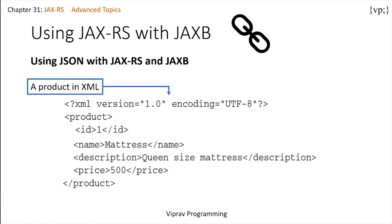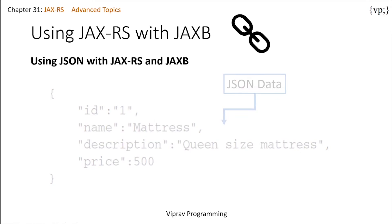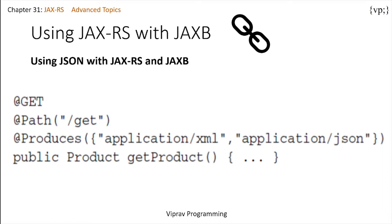We've been talking about XML and how JAX-RS can automatically read and write XML using JAX-B, but it can also work with JSON data. JSON is a simple text-based format for data exchange derived from JavaScript. The XML representation of a product would be as shown, and the JSON equivalent would be this. If you want your data sent in JSON, change the inside of your @Produces annotation accordingly. So your application can be shown in either XML or JSON.